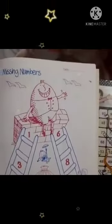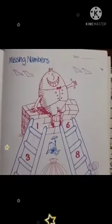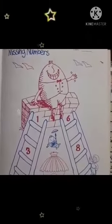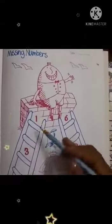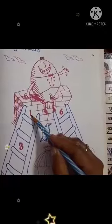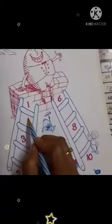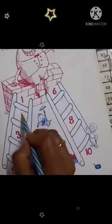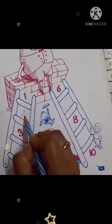Okay children, so let's start missing numbers. Okay children, what comes just after 1? Right here, 2.